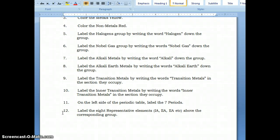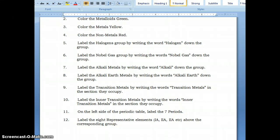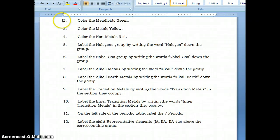So now you should have a colored version of the periodic table with the colors being your metalloids in green, your metals in yellow, and your non-metals in red.